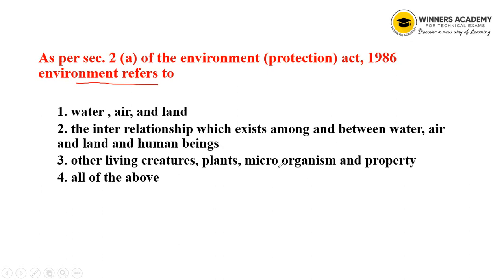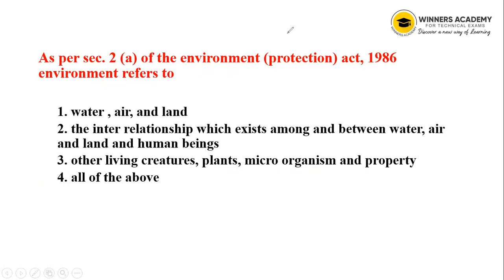Water, air, land — that is the environment. Human beings, living creatures, plants, microorganisms, and property — this is the environment. So the answer is option 4: all the above.